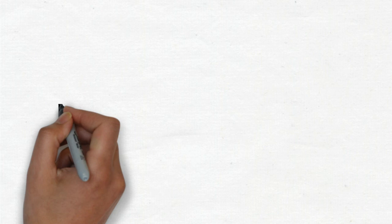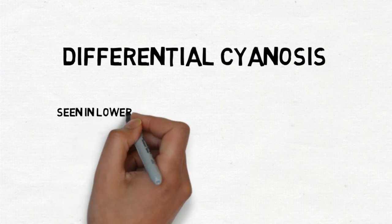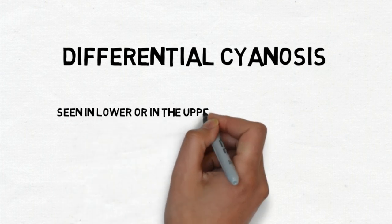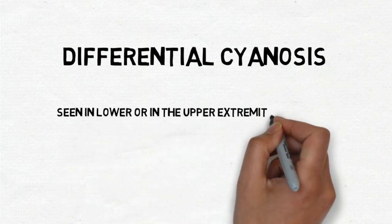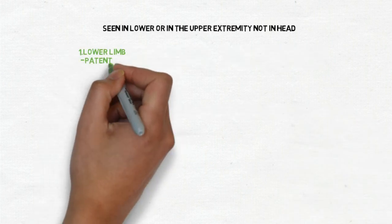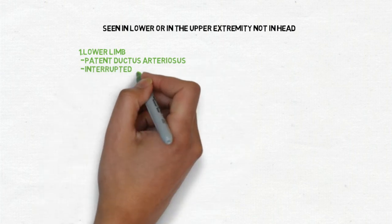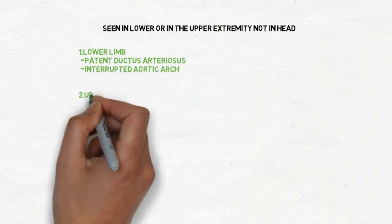Next is differential cyanosis. This is another type of cyanosis. It is seen in either lower or in the upper extremities and generally not seen in the head.